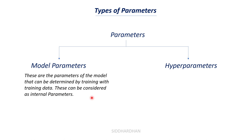Every machine learning model has one or multiple parameters associated with it, and our goal is to find the correct values for these parameters so the model can make accurate predictions. For example, in a linear regression model, slope and intercept are the model parameters. We know the equation of a line is y = mx + c, which is the same for a linear regression model. Here, m and c — slope and intercept — are the model parameters.